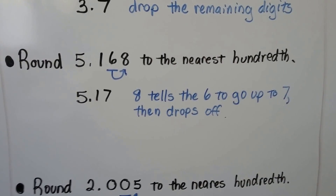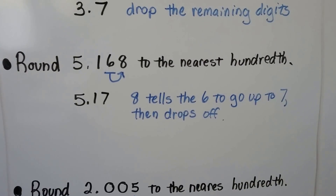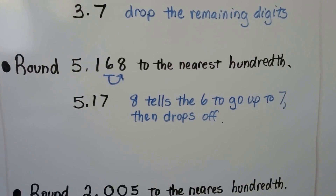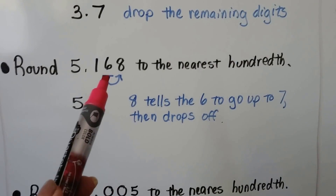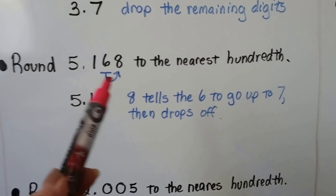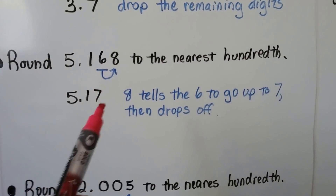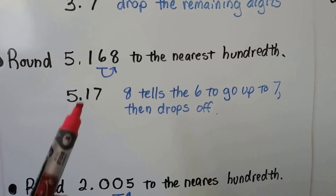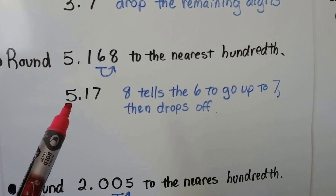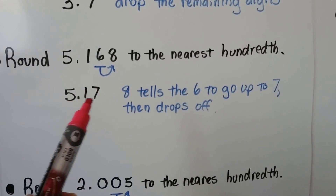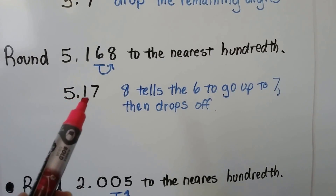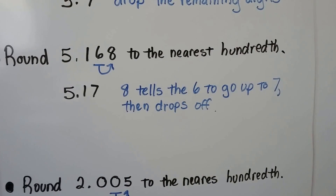We need to round 5 and 168 thousandths to the nearest hundredth. So we identify the hundredths place, and the 8 tells it to go up. So instead of 5.168, we have 5.17. The 8 drops off, and we have 5 and 17 hundredths.